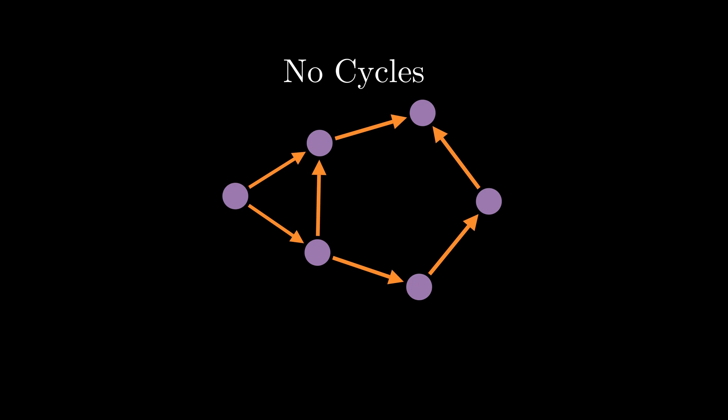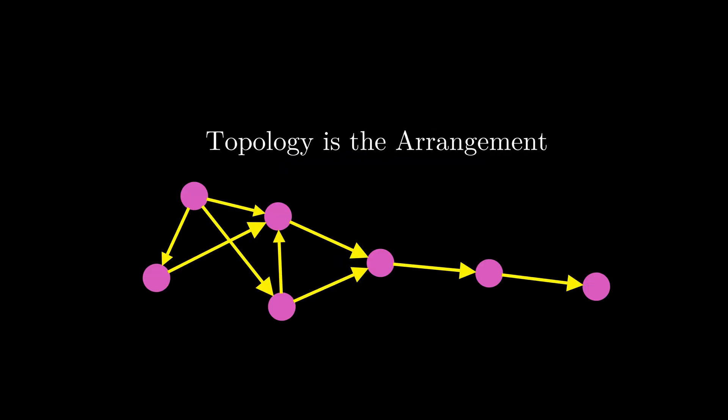And we'll get back to why these constraints are necessary later on in the video. For now, just know that topological sort can only be applied to DAGs, aka directed acyclic graphs. So let's start from the very basics. What is meant by topological? So the topology of a graph is just the arrangement of nodes and connections in a graph. And the key word here is arrangement.